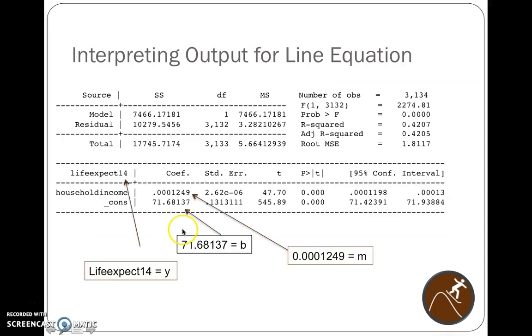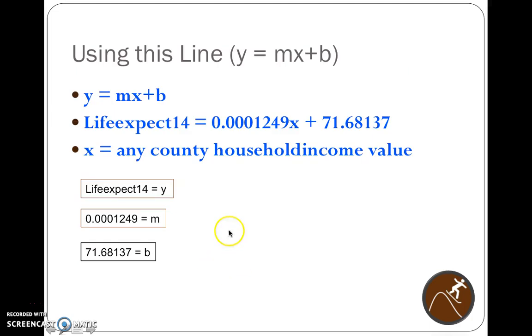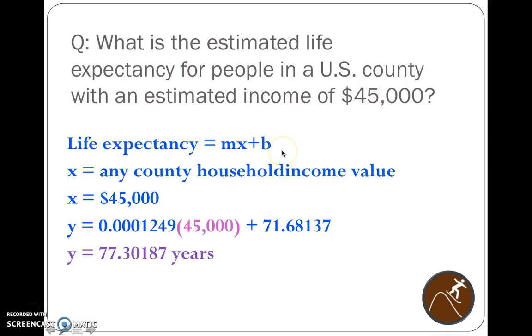So we've got the equation of this line, y equals mx plus b. So if we plug any value into x, we can estimate what that county's life expectancy would be using this formula. y equals mx plus b. So life expectancy equals 0.0001249x plus the y-intercept, our constant term. x is any household income value we want to plug in there. So if we want to know the life expectancy for a community that has $45,000 per year, that's the county's income, the typical income, then y equals mx plus b says to do the following: 0.0001249 times 45,000 plus 71.68 and that gives us 77.30 years is what we would expect the life expectancy to be for that community.